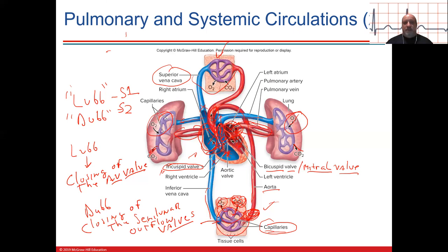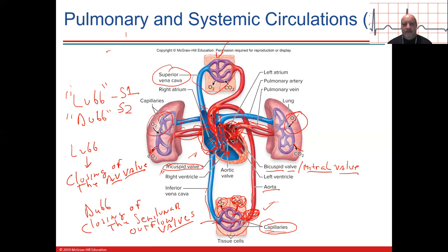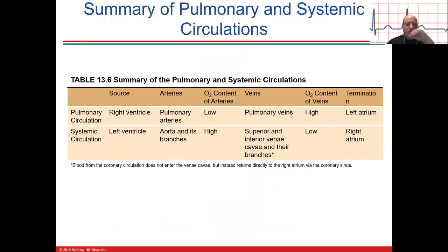Once blood is ejected from the ventricles toward the lungs and the aorta, the semilunar valves slam shut so the ventricles can fill again. Ventricular filling — its timing, volume, and pressure — is very important. This covers pulmonary and systemic circulation.